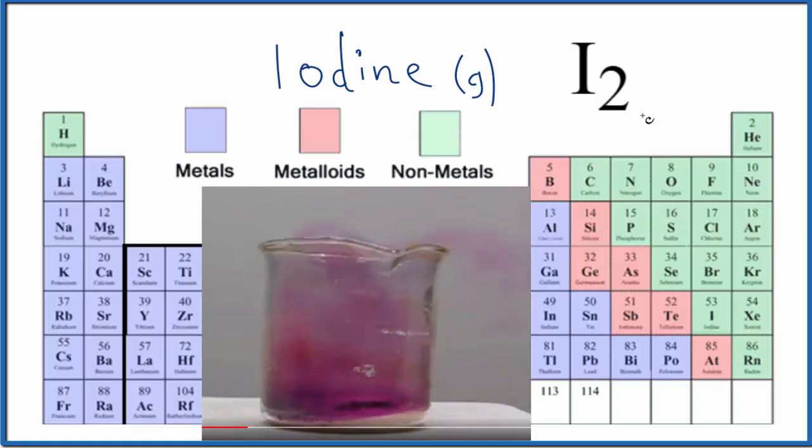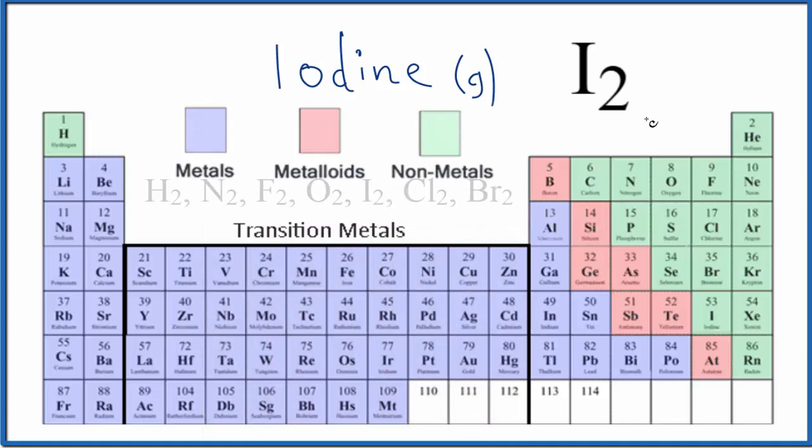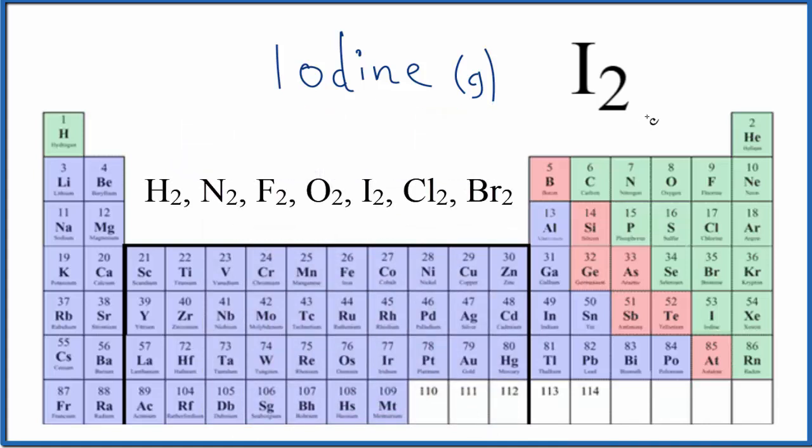I2 is one of the seven diatomic molecules that you should know. Hydrogen, nitrogen, fluorine, oxygen, iodine, chlorine, and bromine.